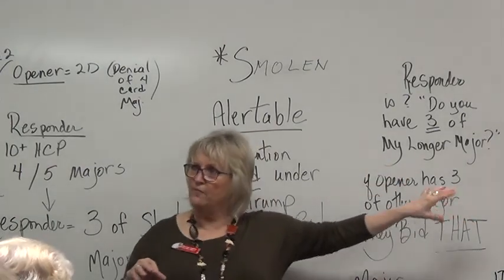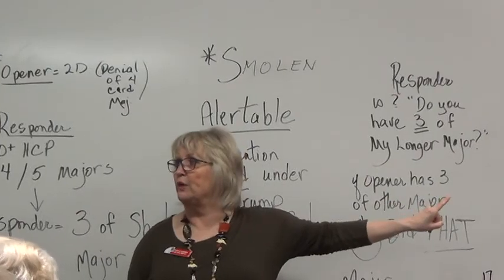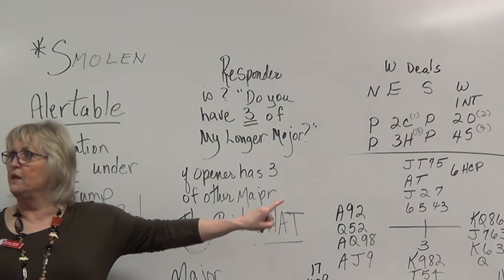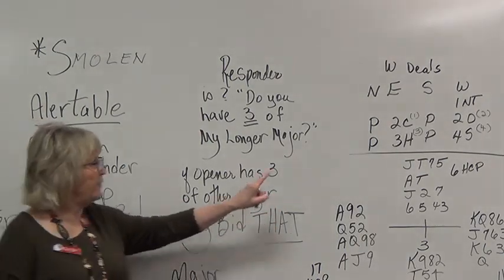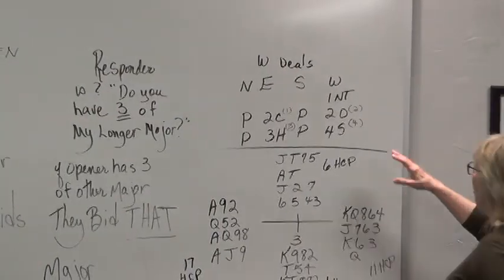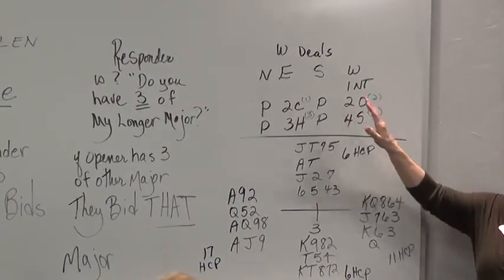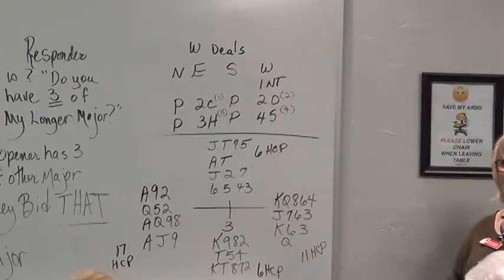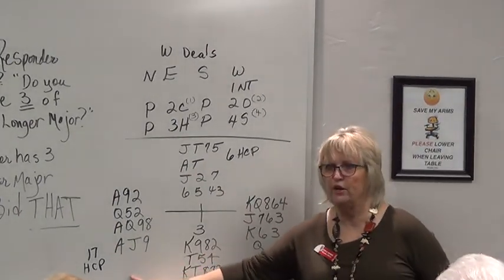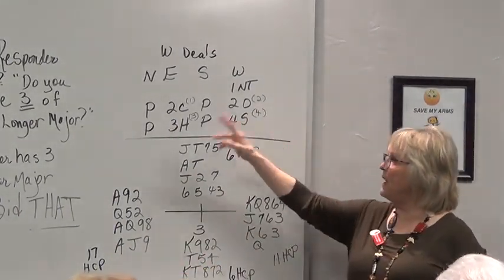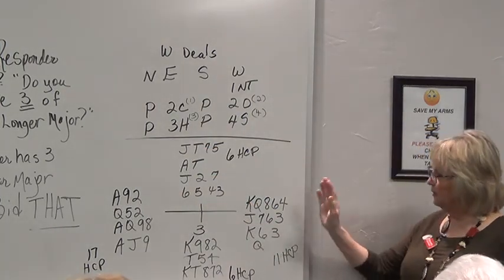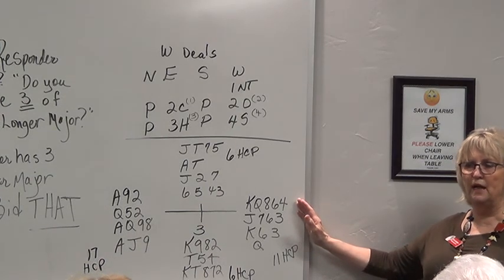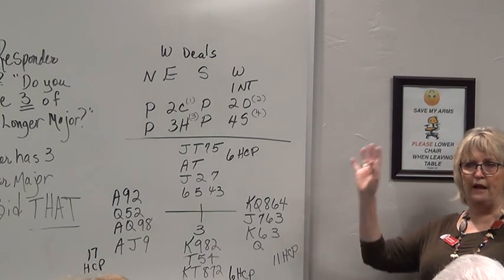Now here's another example. This came off of a hand record of a game we played recently. I looked through the hand records to find examples. I don't like to make them up. These are real life. This was played. Now, in this hand, your opener, in the west, said one no trump. And there's their hand with 17 high card points. It's a classic one no trump opener. Passed round with a pass. Comes over here.